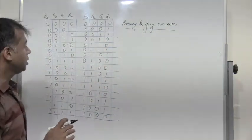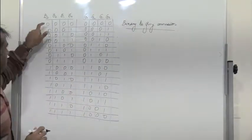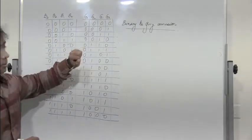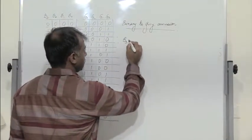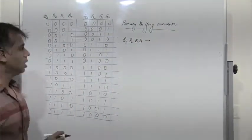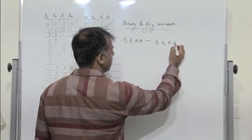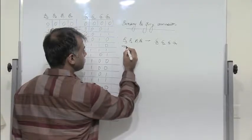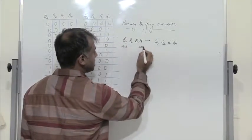When we are talking about binary to gray conversion, I have considered a 4-bit binary data: B3, B2, B1, B0. This has to be converted to a gray code. Since I am considering a 4-bit binary data B3, B2, B1, B0, it is converted to a 4-bit gray code: G3, G2, G1, and G0. B3 happens to be the MSB — the most significant bit — and B0 happens to be the LSB, the least significant bit.